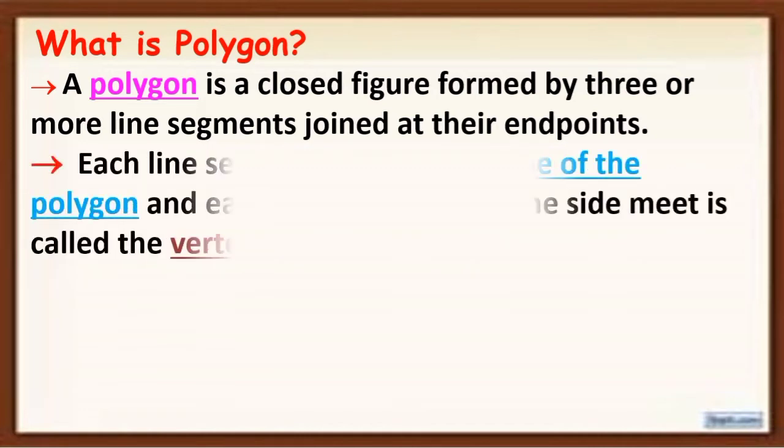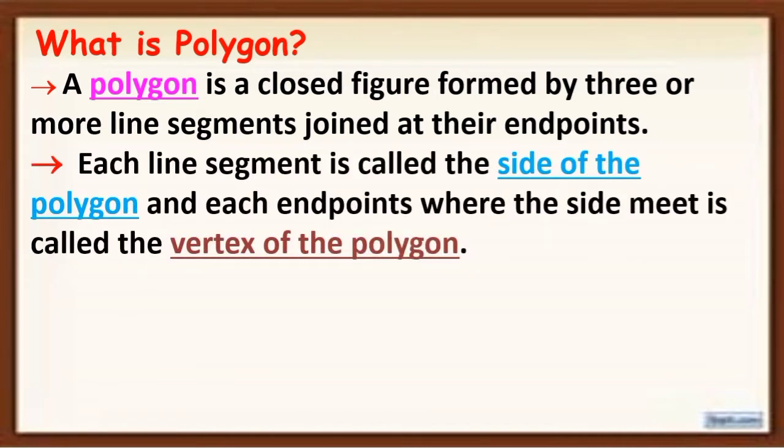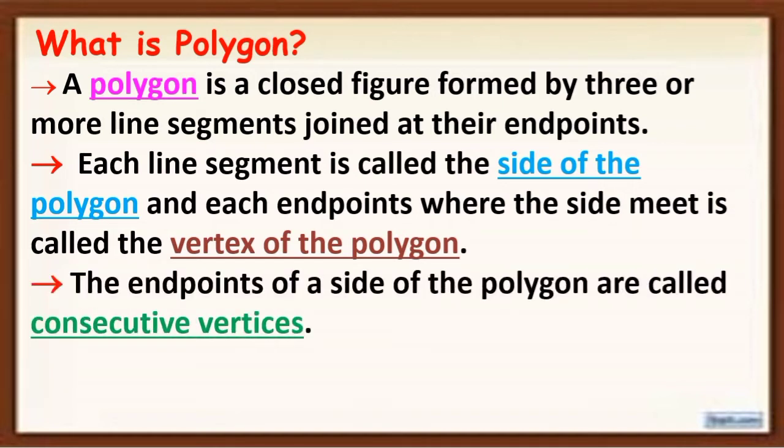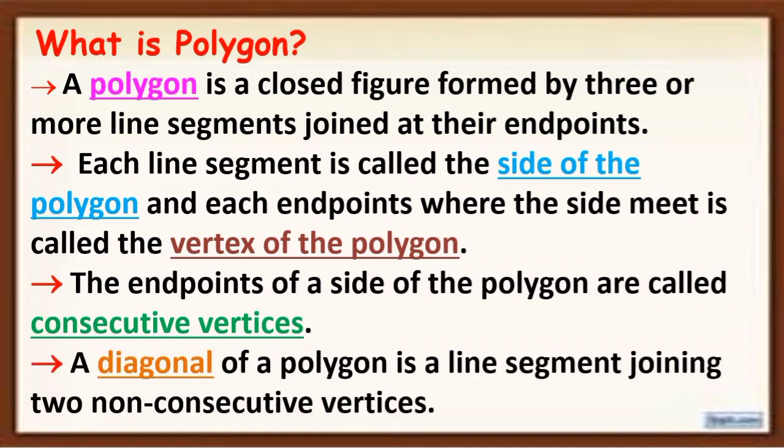Remember that each line segment is called the side of the polygon and each endpoint where the side meet is called the vertex of the polygon. The endpoints of a side of the polygon are called consecutive vertices. A diagonal of a polygon is a line segment joining two non-consecutive vertices.